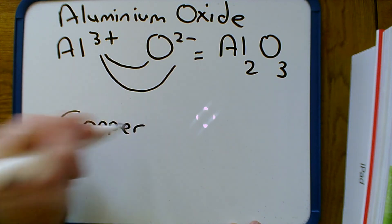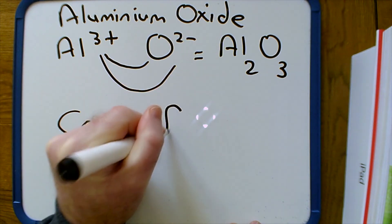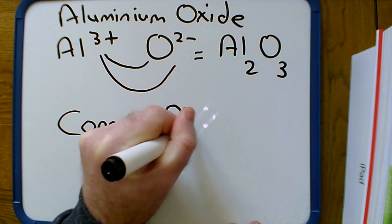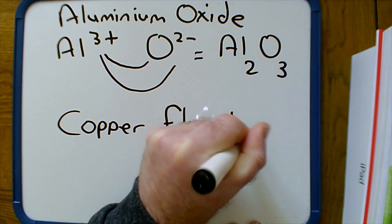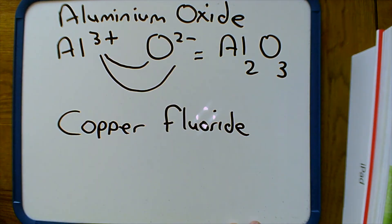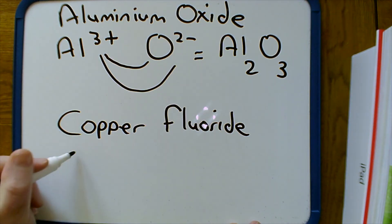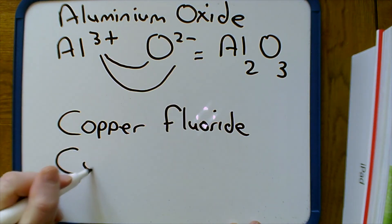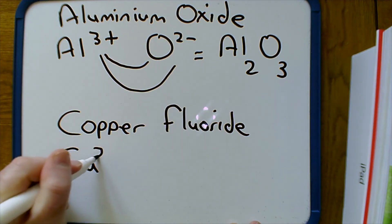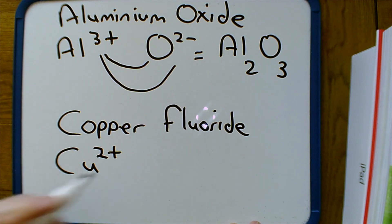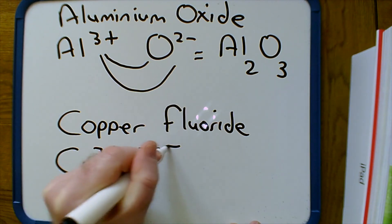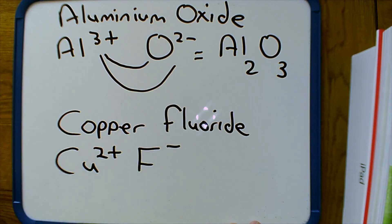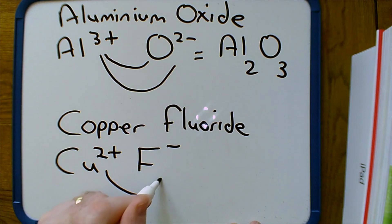For copper fluoride: copper is a Cu2+ ion and fluoride is an F− ion. How many minuses do I need to cancel the 2+? Two fluoride ions — two minuses. So the formula is CuF2.